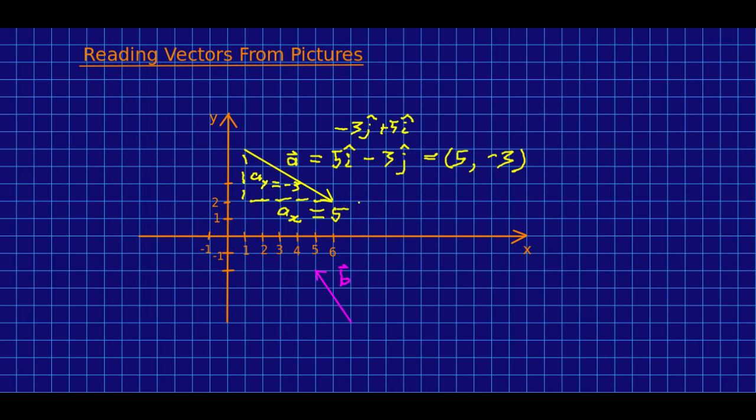Note many students would look at this vector and incorrectly say that its x component is 6 and its y component is 2. Do you see why they would say that? That's where the end is isn't it? But that's not what we care about. What we care about is how far over and down this vector carries us.